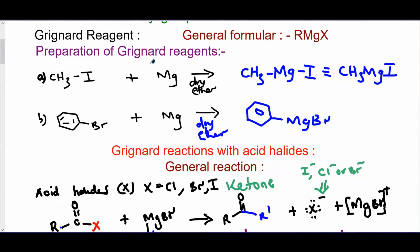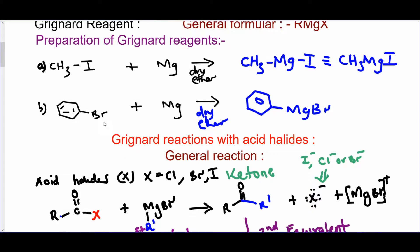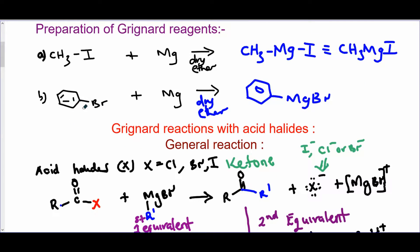To prepare Grignards, react an alkyl halide like methyl iodide with magnesium. The magnesium just quickly inserts between the carbon of the alkyl group and the halogen to get the Grignard reagent. Sometimes you have an aromatic ring with a halogen. You do an insertion of magnesium in between the sp2 carbon of the ring and the halogen. You get your Grignard.